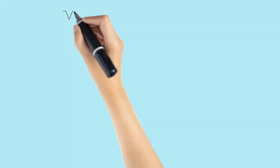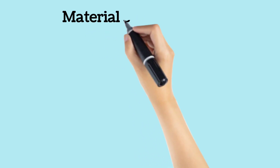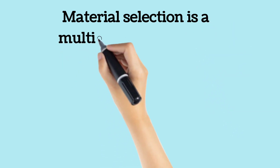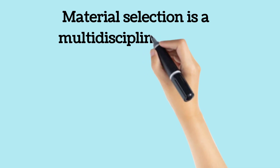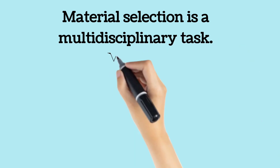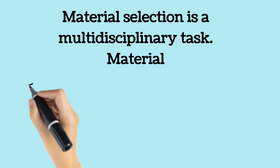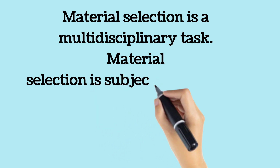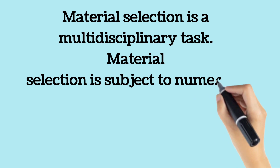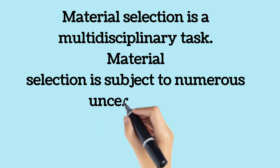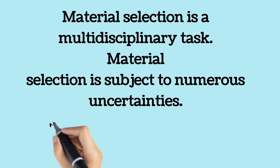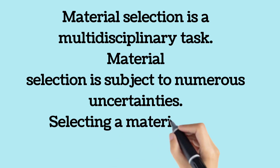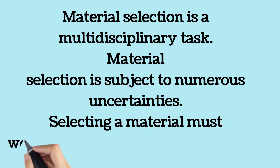Material selection is a multidisciplinary task which requires the interaction of numerous stakeholders, including product designers, material scientists, test engineers and end-users. Material selection is subject to numerous uncertainties, including those associated with the design specification and material properties. Other important factors to consider in material selection include the actual material costs, the manufacturability of the material, its environmental impact, and its chemical and physical properties.